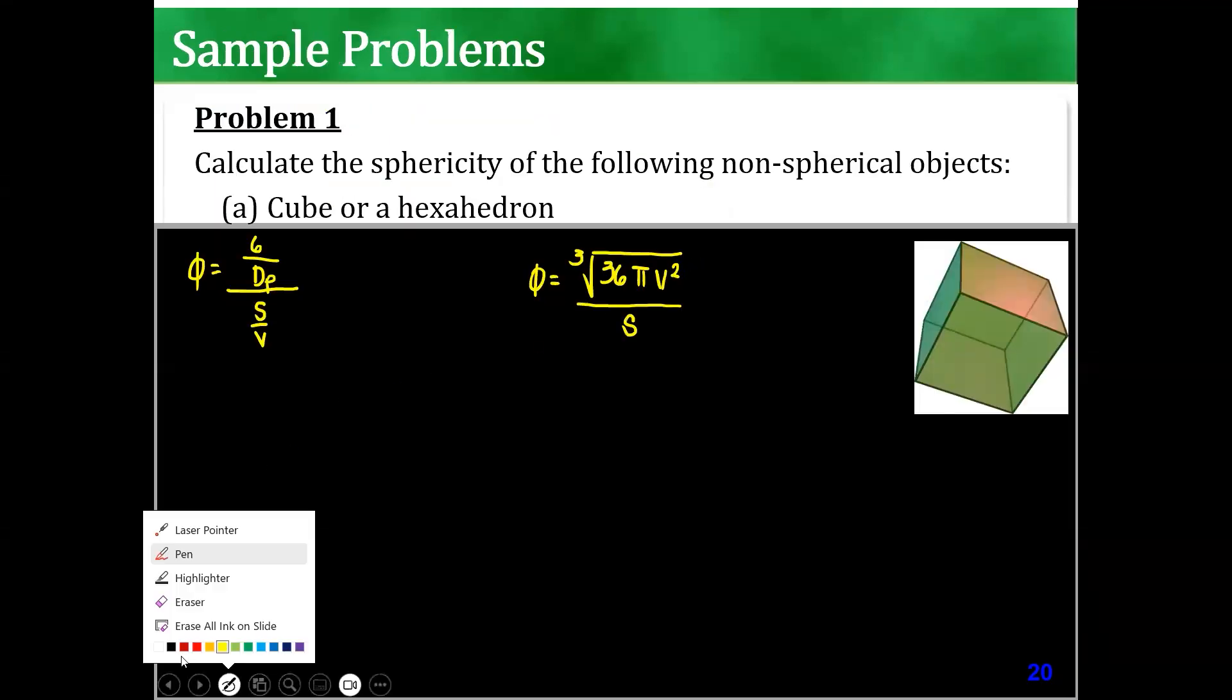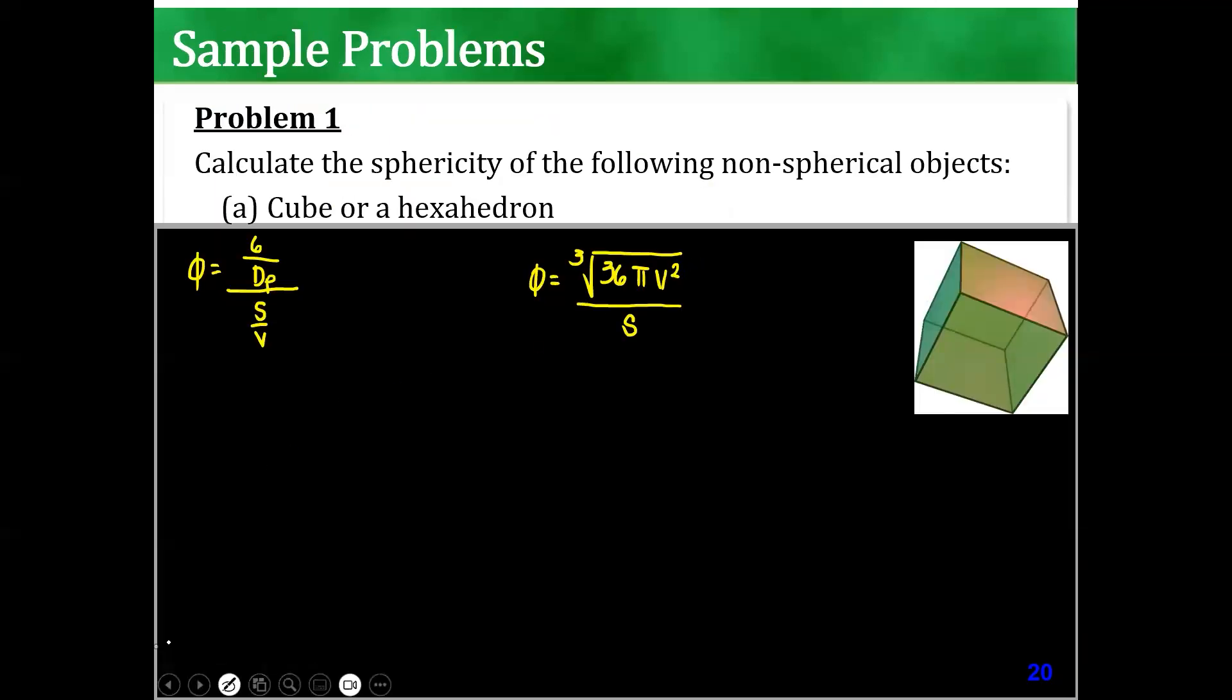So with this, let's assume that the side is just A. The length of one side is A. So that means, what is the volume? I can see that the volume is A cube. What is the surface? How many surfaces? 6, right? 6 times A squared. Am I correct?